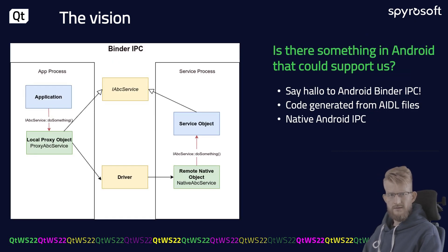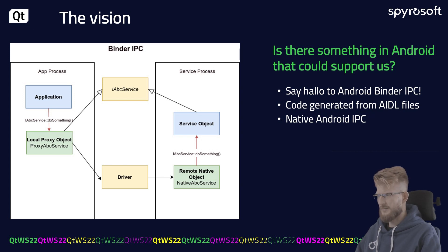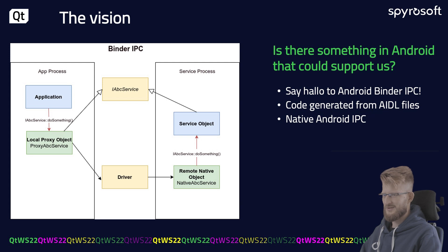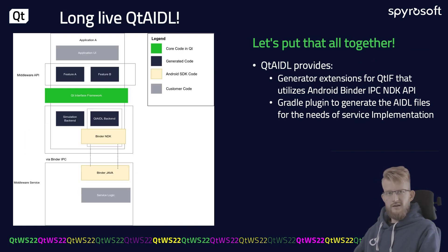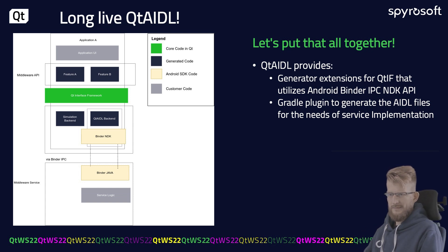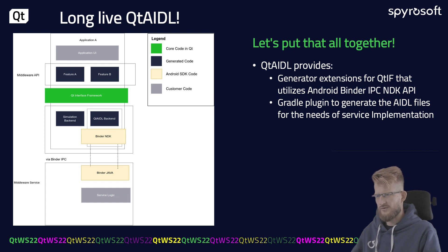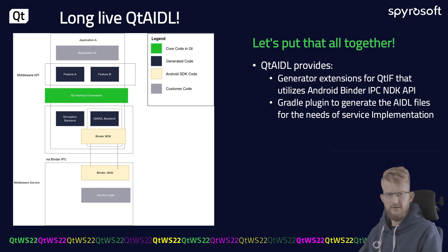Let's get back to Android then. The native interprocess communication method for Android is Binder. Code for both C++ and Java parts can be generated from AIDL files. Using Qface, we can generate the code responsible for C++ to QML integration and also the AIDL files themselves. After that, AIDL can be used to generate both C++ and Java Binder code.